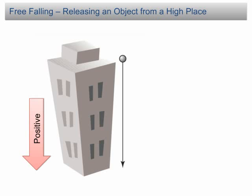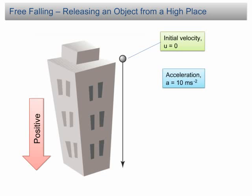There are a few important things you need to know regarding this motion. When an object is released from a high place, the initial velocity is zero. In SPM, we always ignore the effect of air resistance. Therefore, the motion is free falling and the acceleration is equal to the gravitational acceleration, which is 10 meters per second per second. When the ball hits the ground, the displacement of the ball is equal to the height of the building.